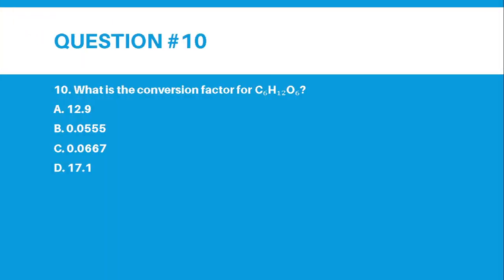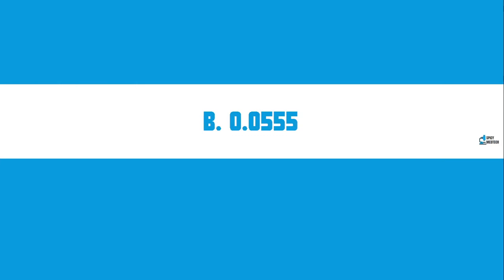Number 10. What is the conversion factor for C6H12O6? A. 12.9, B. 0.0555, C. 0.0667, or D. 17.1. The correct answer for number 10 is letter B — 0.0555, the conversion factor for glucose.